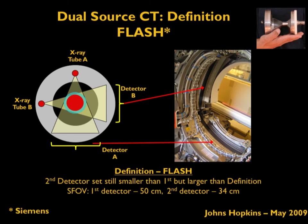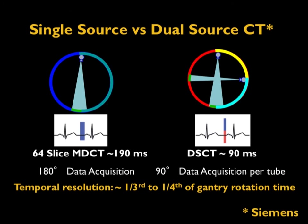The second CT technology advance is the dual source CT. In dual source CT, two X-ray tubes are positioned perpendicular to each other at 90 degrees, with detectors at the opposite ends. This allows data to be acquired at a much faster rate, thereby increasing temporal resolution. Compared to single source CT, dual source CT can achieve temporal resolution as high as one-quarter of the gantry rotation time — as much as one-third to one-fourth of the gantry rotation time.